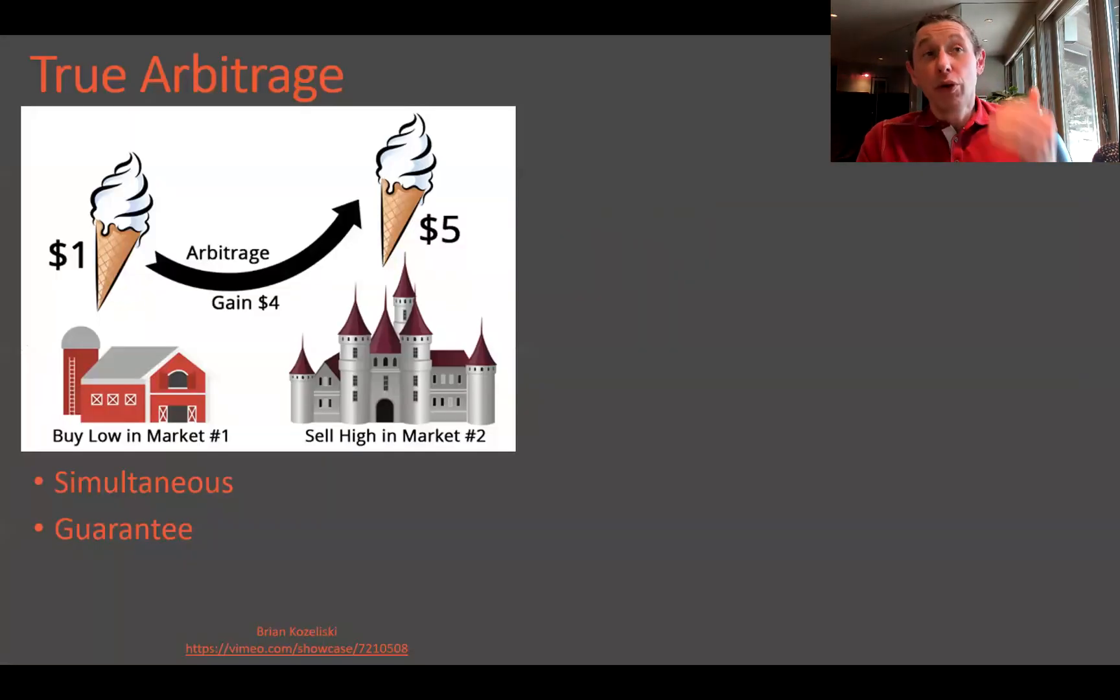Well, a true arbitrage is where you're able to buy something in one market for a low price and sell it simultaneously in another market for a high price. This happens simultaneously. It needs to be the case in order to lock in those prices. You're essentially guaranteed to make a profit doing so.